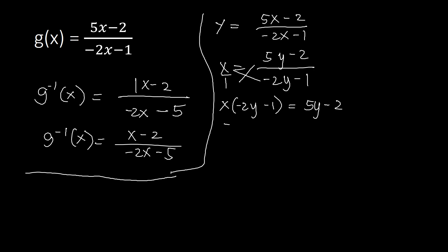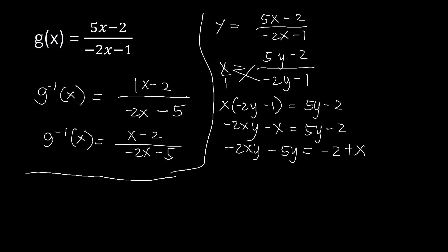Distributing x gives negative 2xy minus x equals 5y minus 2. Move all y terms to the left: retain negative 2xy, move x to the right, and move 5y to the left as minus 5y. So we have negative 2xy minus 5y equals negative 2 plus x.